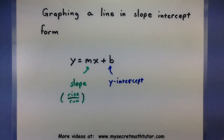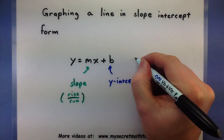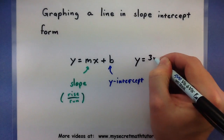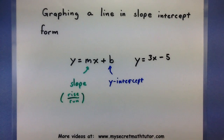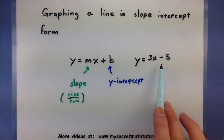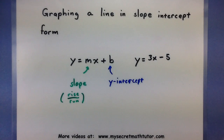A good example of a line written in slope-intercept form would be something like y equals 3x minus 5. This tells me that my slope is 3 and that I have a y-intercept of negative 5. Let's do a couple of examples so you have a better idea of how this process works.